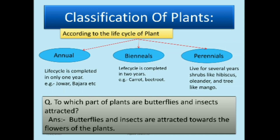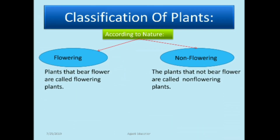Here is a question: to which part of plants are butterflies and insects attracted? The answer is butterflies and insects are attracted towards the flowers of the plant. The next classification is according to their nature: flowering plants and non-flowering plants. Flowering plants produce flowers — for example, mango tree and hibiscus. Non-flowering plants do not produce flowers.